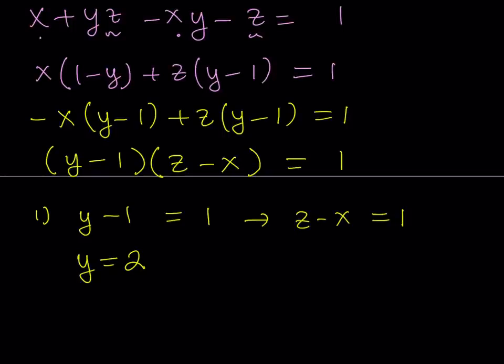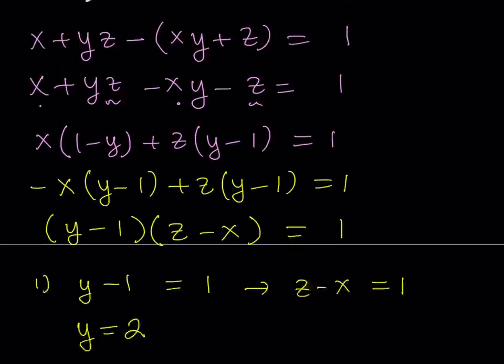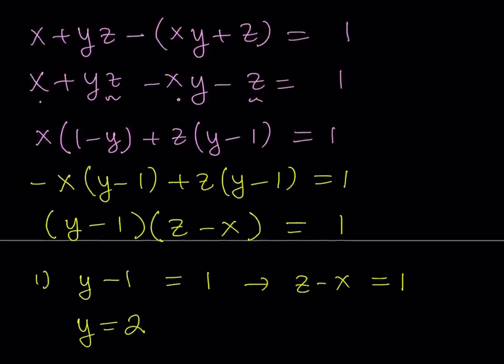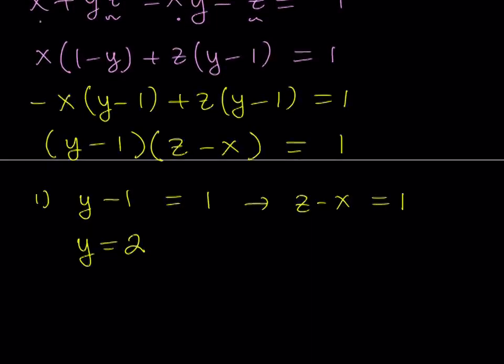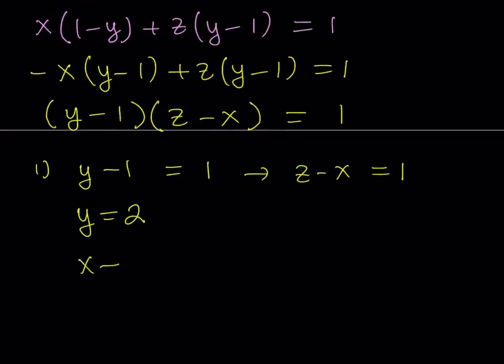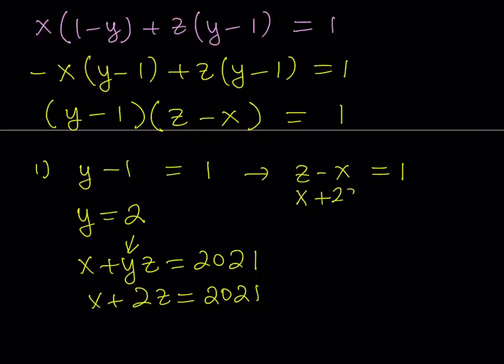Now I would like to find x and z as well, but I only have one equation. We can go to the original equations and replace y with 2. I'd like to use the second equation: x + yz = 2021. If you replace y with 2 here, you get x + 2z = 2021. Let's solve this system by elimination.